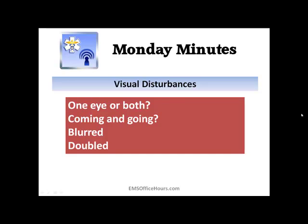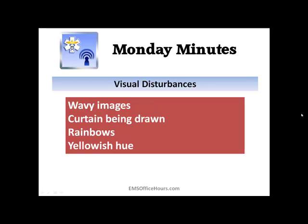What about visual disturbances? This is kind of tricky and more in-depth when you're looking at patient assessment. Are they having problems seeing? Is it one eye or both eyes? Does it happen all the time or is it coming and going? Are they complaining of blurred vision or double vision? All of these things can lead you on the path that something neurological might be going on.